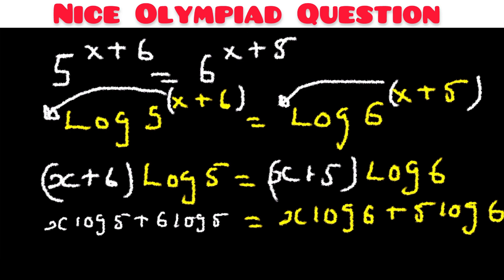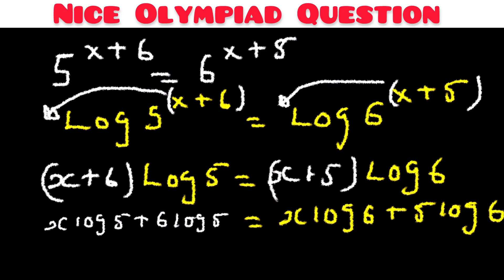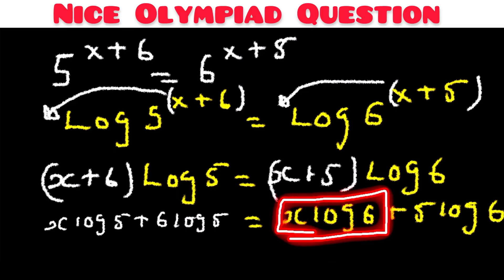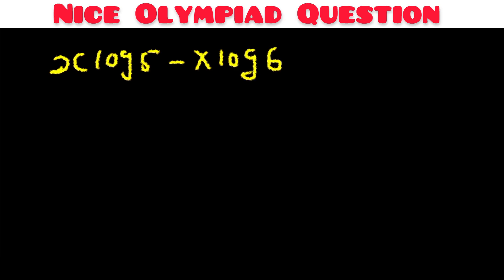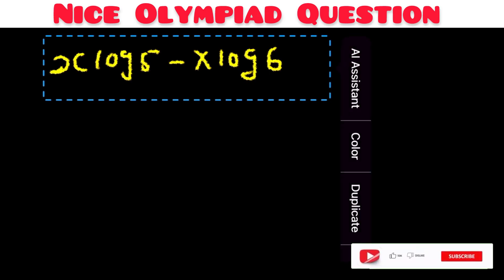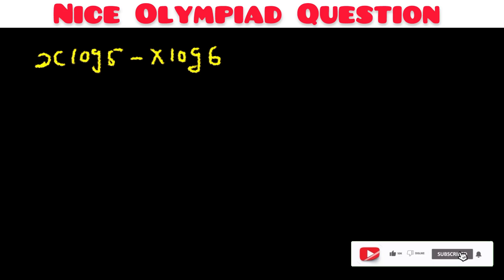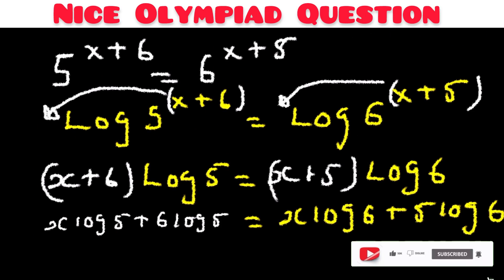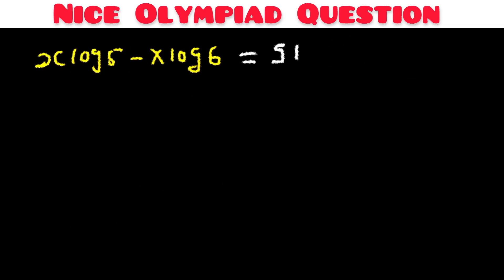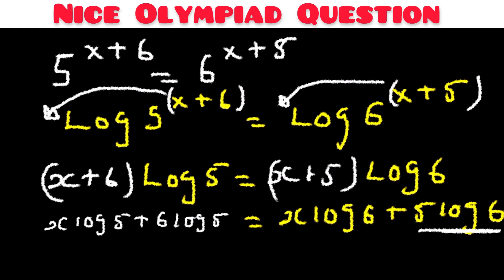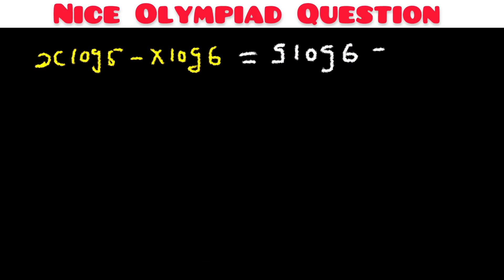Now we collect like terms, keeping the x terms together and the constant terms together. This gives us: x log 5 minus x log 6 equals 5 log 6 minus 6 log 5.